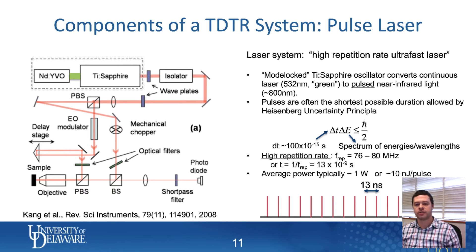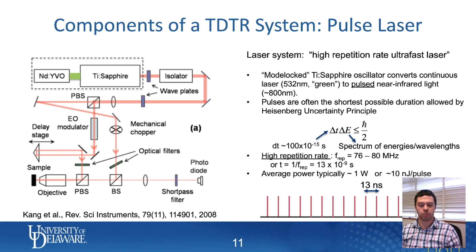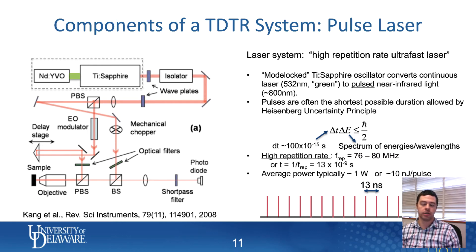Output powers for these lasers can be very high, but typically there's around one watt of total power coming out of the titanium sapphire laser when it's mode-locked. If you convert that to the energy in each individual pulse by multiplying by the time between pulses, that gives you something around the nanojoule per pulse mark, depending on the exact instrument.